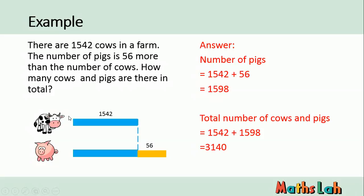I hope it's clear. Basically, the trick is to draw the diagram and draw out the additional 56. Then you find the number of pigs and add it to the number of cows. That will give you the total number of animals you have.